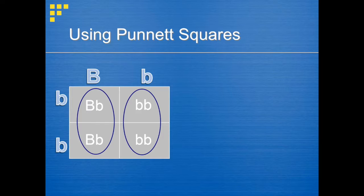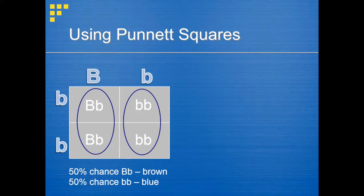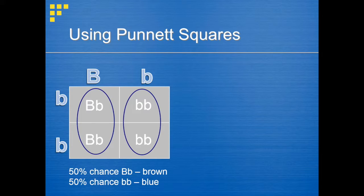What does this tell us about the possibilities for the offspring's actual features? If the offspring has genotype capital B, lowercase b, they will have brown eyes because they carry one dominant allele. If the offspring has genotype lowercase b, lowercase b, they will have blue eyes because they only carry recessive alleles. Let's do another Punnett square, assuming grandpa's genotype was homozygous instead of heterozygous.